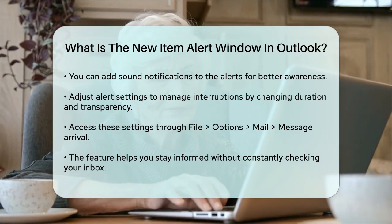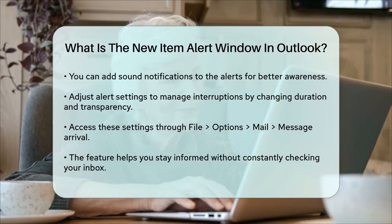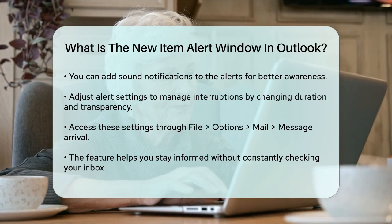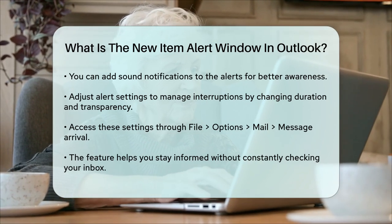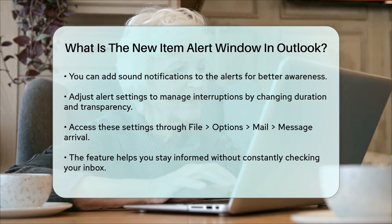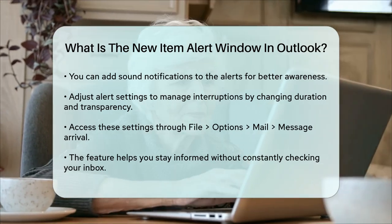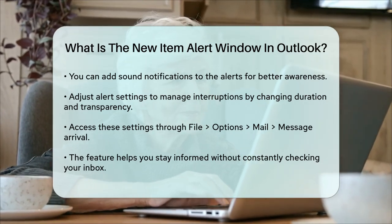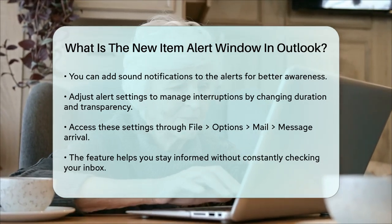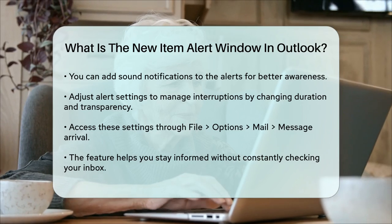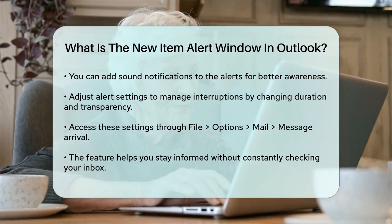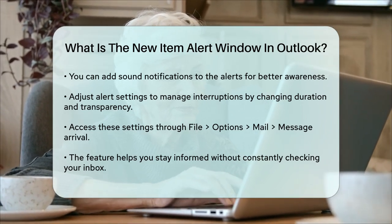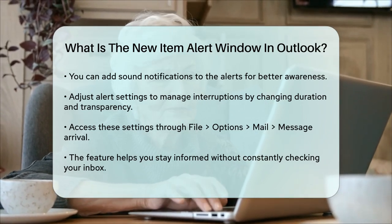In summary, the New Item Alert window in Outlook is a handy feature that helps you stay notified about important emails without disrupting your workflow too much. By setting up specific rules and customizing the alerts, you can ensure you never miss a critical email.